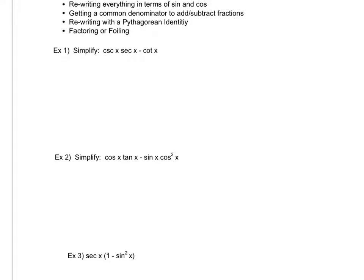I'm going to jump right in here to example two. We're simplifying cosine x times tangent x minus sine x times cosine squared x. In the first video, we simplified example one and discussed some things to try. Once again, I'm going to try to change everything to be in terms of sine and cosine.